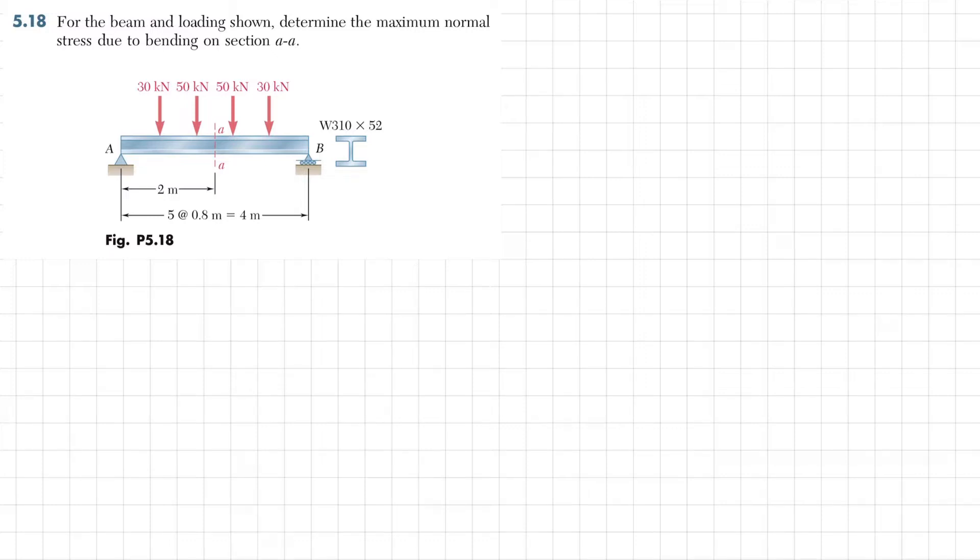We will write the given data. We have that this is a W310 by 52 beam, and we have to find the maximum normal stress due to bending on section AA.